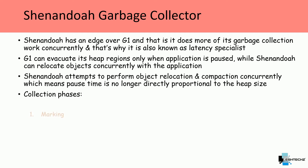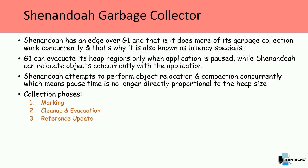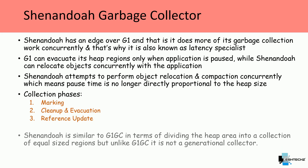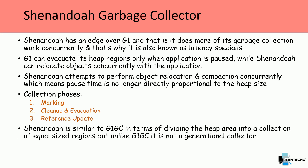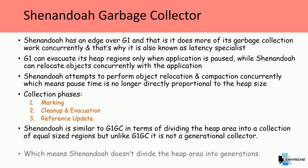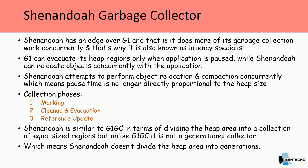The collection phases in Shenandoah are marking, cleanup and evacuation, and reference update — where reference update is a new phase. Shenandoah is similar to G1GC in dividing the heap into equal-size regions, but unlike G1GC, it is not a generational collector — it does not divide the heap into generations.